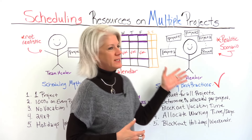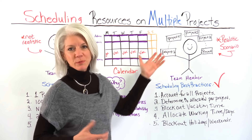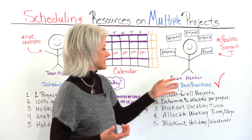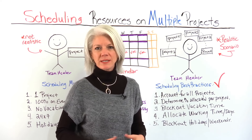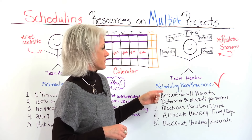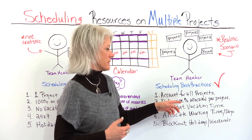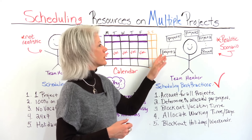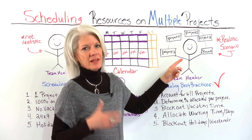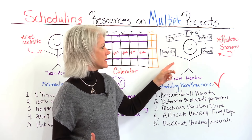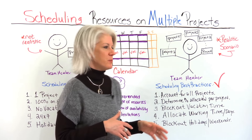The more realistic picture is that your team members work on multiple projects, so they're juggling multiple projects. Instead, we want to use scheduling best practices where you account for all of their projects and determine the percent allocated per project, because for every project they're working on there is a budget that allocates them for each one, so you need to align your time with that.